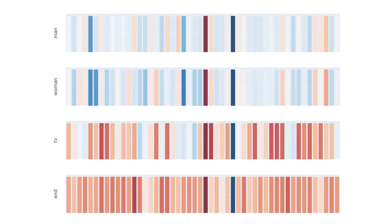The key takeaways: intuitively we know that 'man' and 'woman' are similar to each other because the context we use the word 'man' in would also use the word 'woman.' Here we can see visually that the word vectors for 'man' and 'woman' are pretty similar compared to 'tv' and 'end.' Now 'man,' 'tv,' and 'end' are all nouns, so they have some similarity — you might say 'the man stood' or 'the tv stood,' but not 'the end stood' — so 'end' is far apart from 'man' or 'woman.'